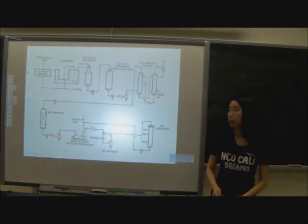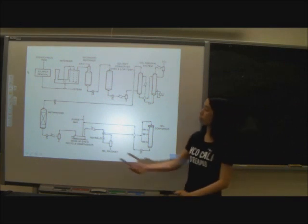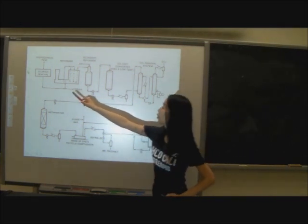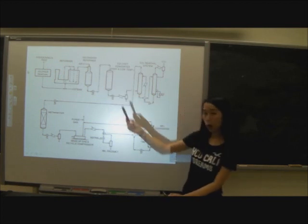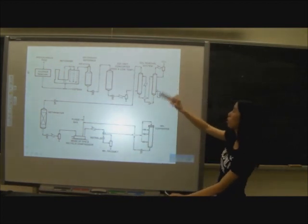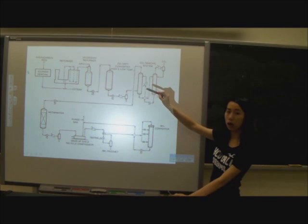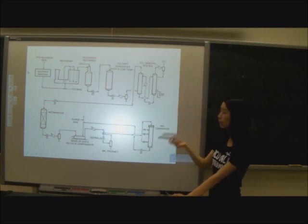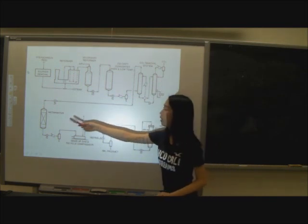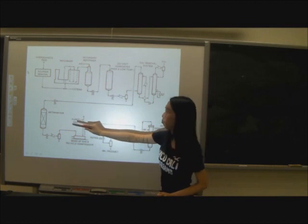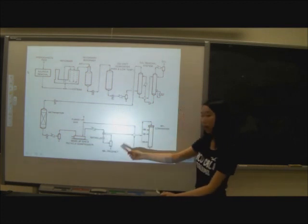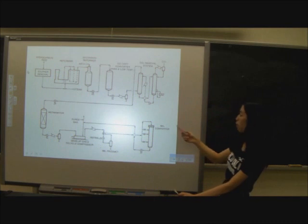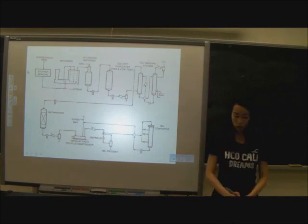To summarize the Haber process: methane is passed through sulfur removal, then through the secondary reformer. Then carbon dioxide is removed from the system to avoid contamination of the ammonia synthesis catalyst. Then it's passed through a methanator to recycle for methane. Through all these complex stages, it gives us ammonia from the ammonia converter.